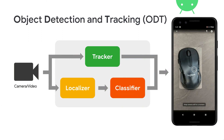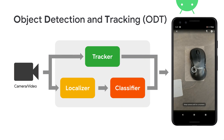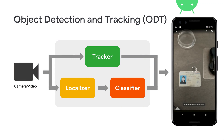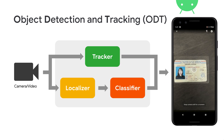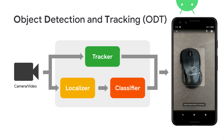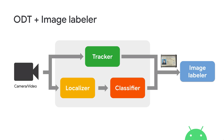We can solve this with ODT. Internally, ODT runs two pipelines in parallel to return a real-time location of the object in the camera. Using this location information, we can crop out the content of the document and pass just that cropped image into the Image Labeler.